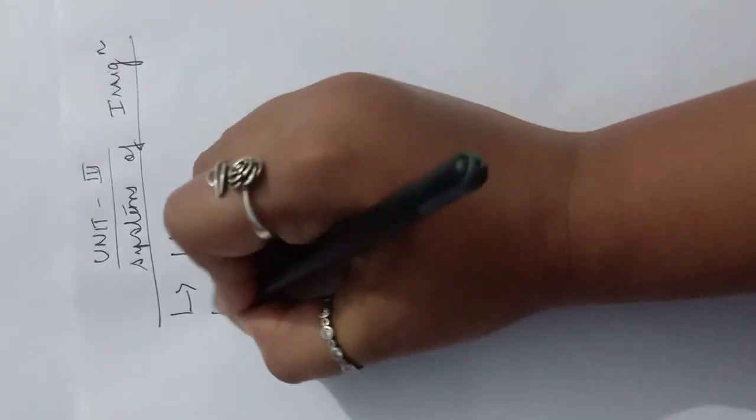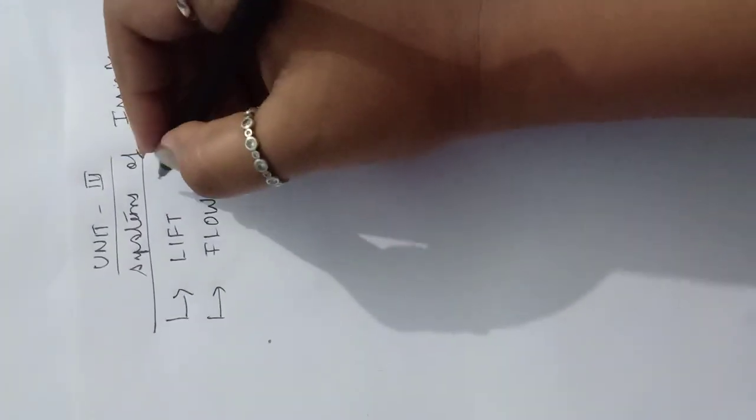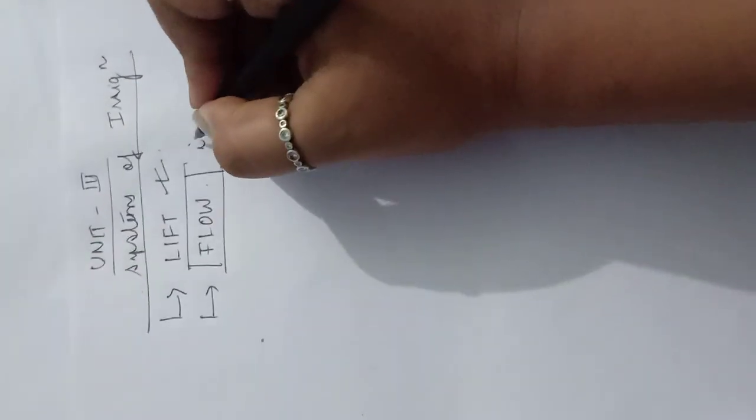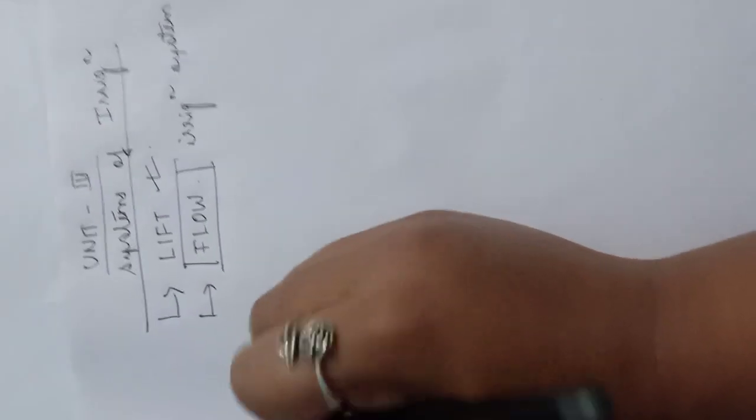Hello students, hope you are doing good. In my last video we discussed Unit 3, the systems of irrigation. We learned that there are two systems of irrigation: lift and flow. In my last video I already discussed lift irrigation, so today I'll mainly discuss the flow irrigation system.